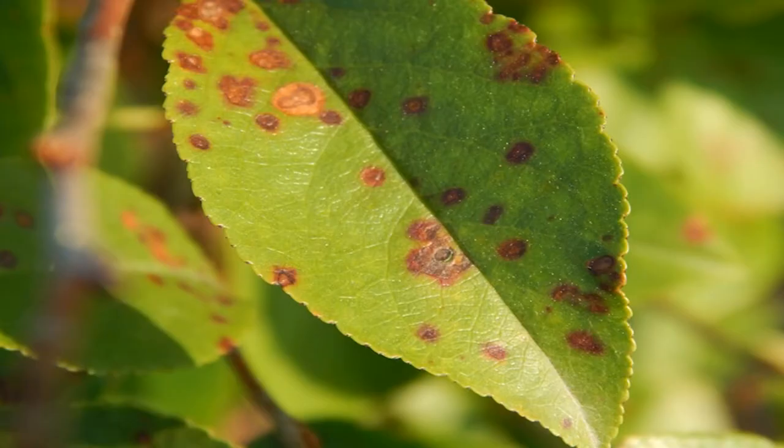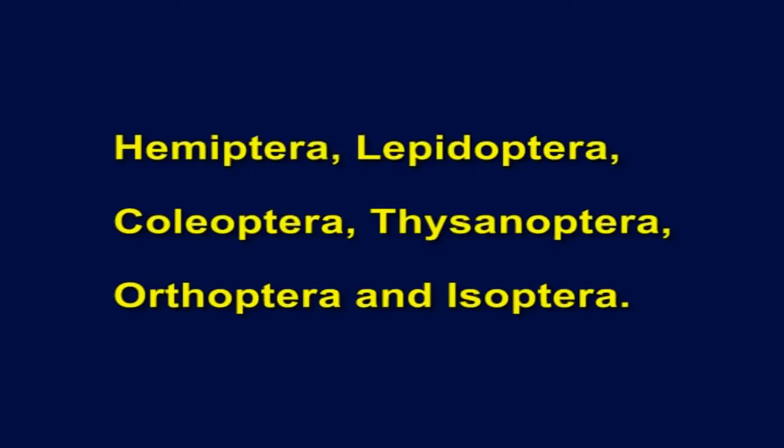The major insect species known to inflict damage to mulberry belong to orders Hemiptera, Lepidoptera, Coleoptera, Thysanoptera, Orthoptera, and Isoptera. Larvae of Lepidoptera constitute an important and sometimes devastating group of pests causing defoliation of mulberry in varying degrees. So far, 37 species under 27 genera and 16 families have been reported to infest mulberry from different countries.